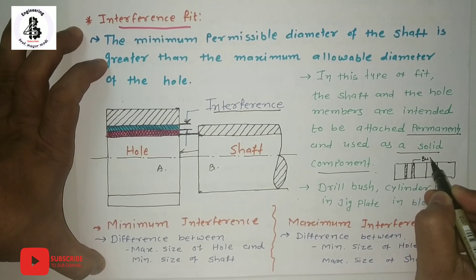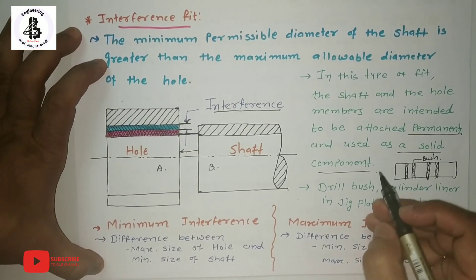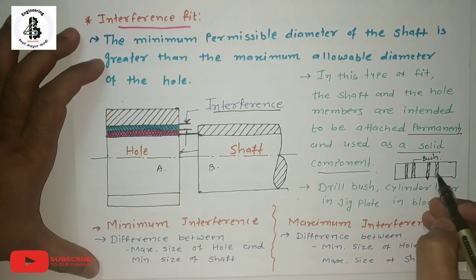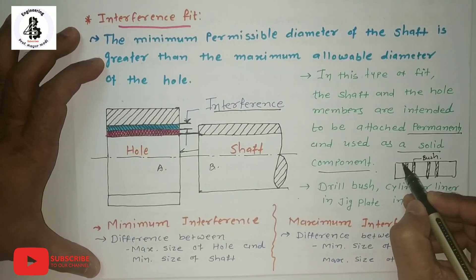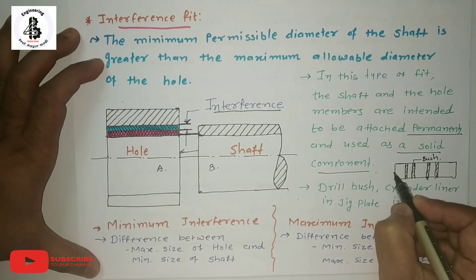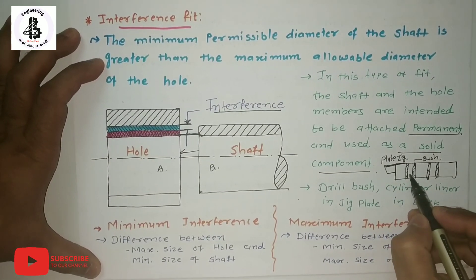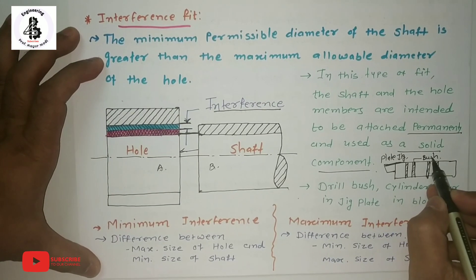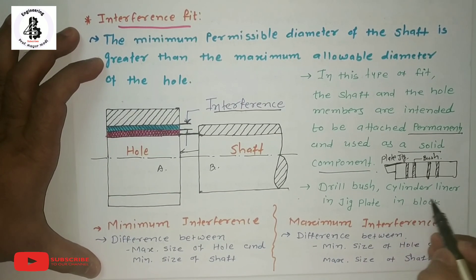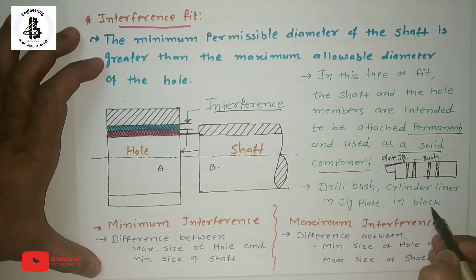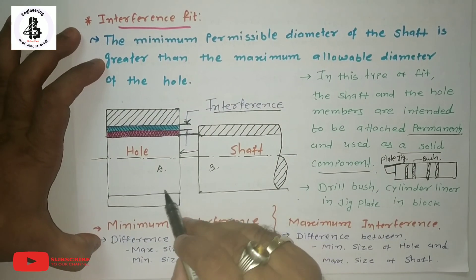The bush material — either rubber or metallic material, depending on the application — is intentionally inserted into the plate. This is considered a plate jig. Plate jigs include bushes for increasing the life of the jig. A second example is the cylinder liner inserted into the engine block. These are examples of assemblies using interference fit.